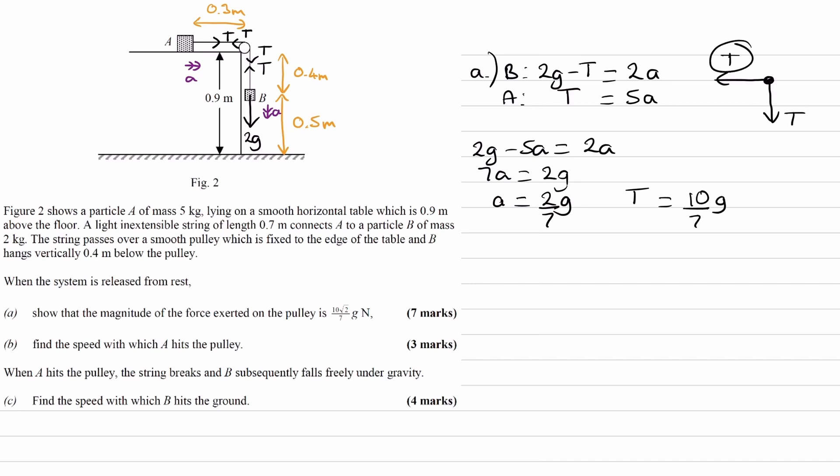So each tension force is 10g/7. I'm not converting g to 9.8 because we want g in our final answer. Consider g as an algebraic symbol like x. The overall force on the pulley has two components: 10g/7 horizontally and 10g/7 downwards. We can use Pythagoras with these two lengths.